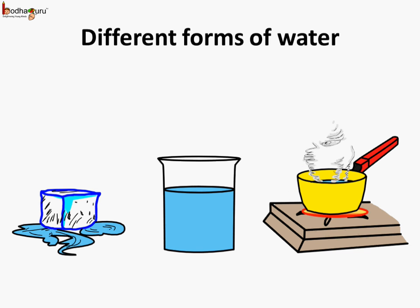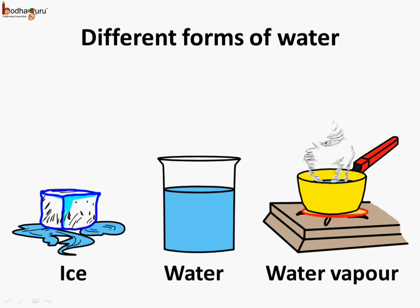So, now you know different forms of water. This is ice which is very cold. And this is water. And this is water vapor.